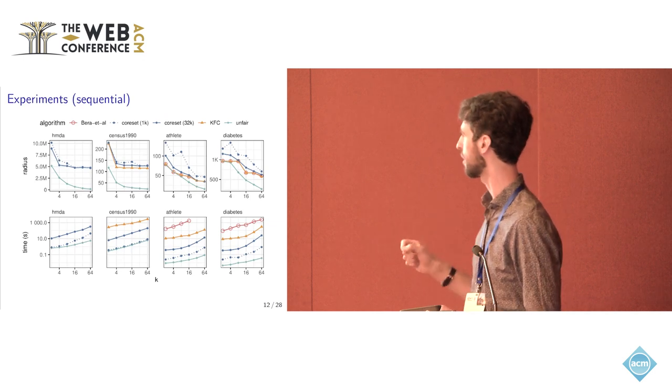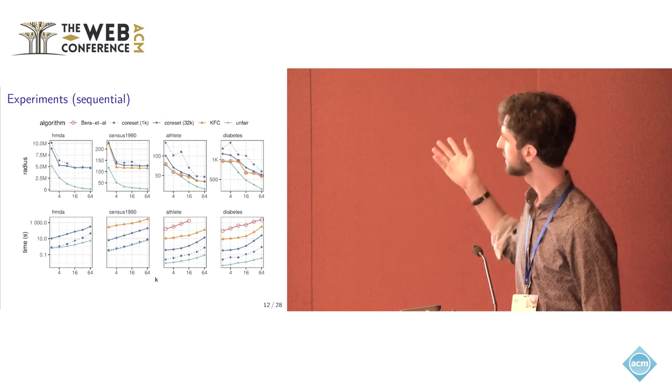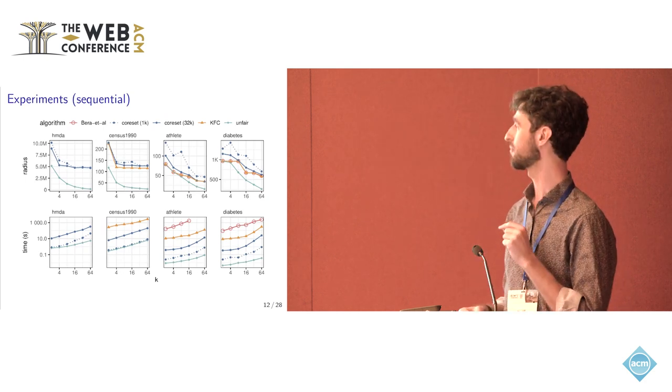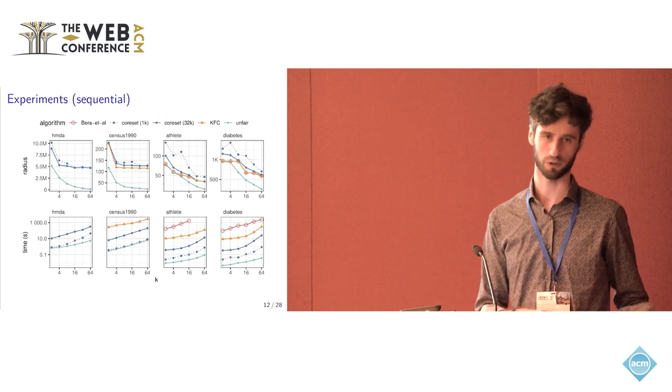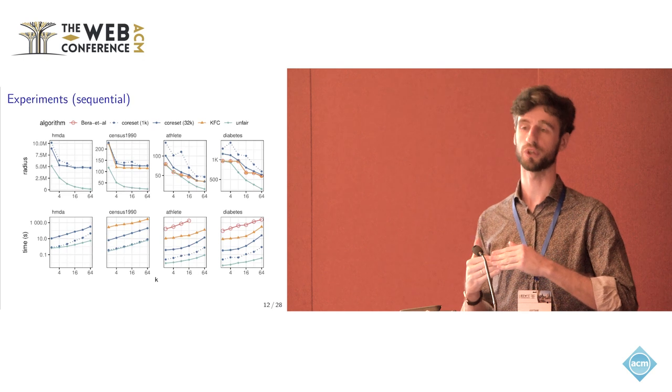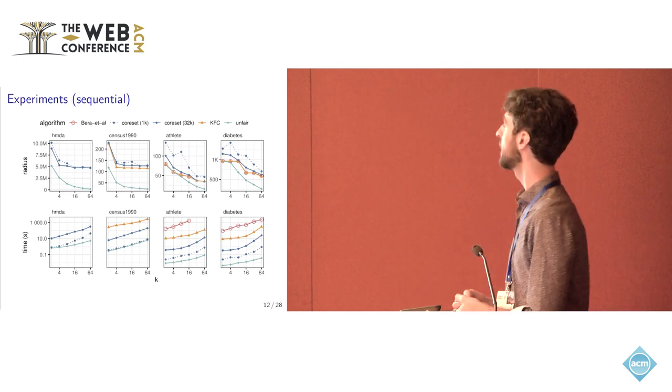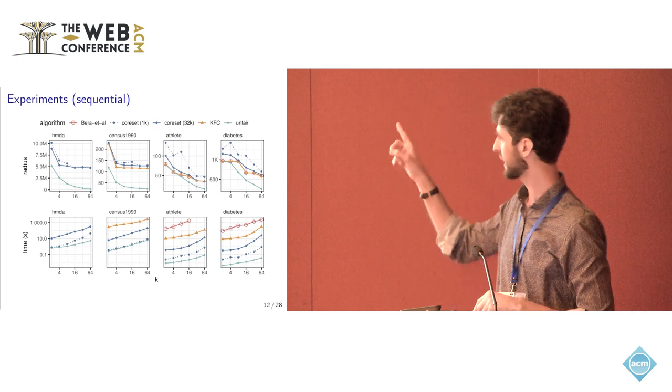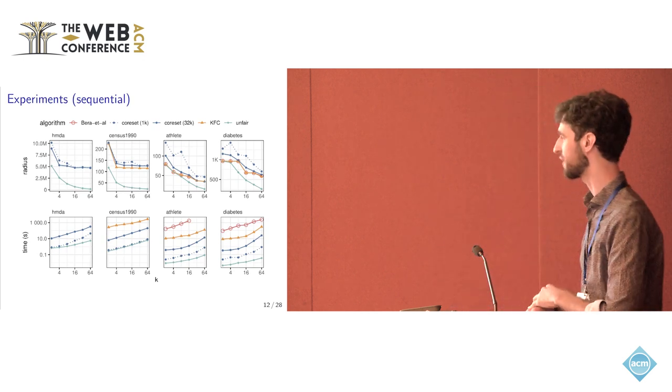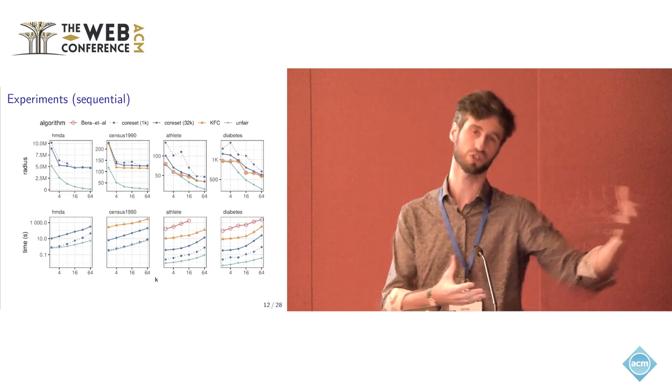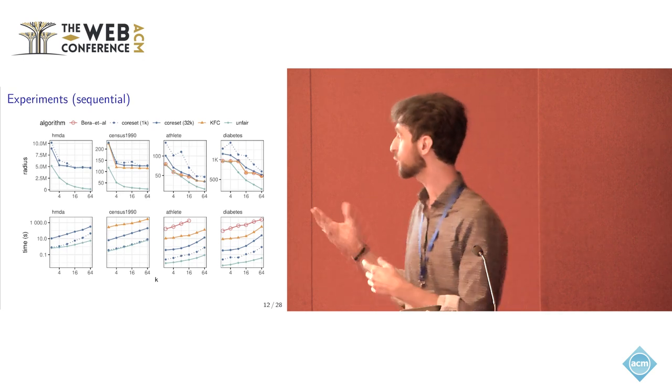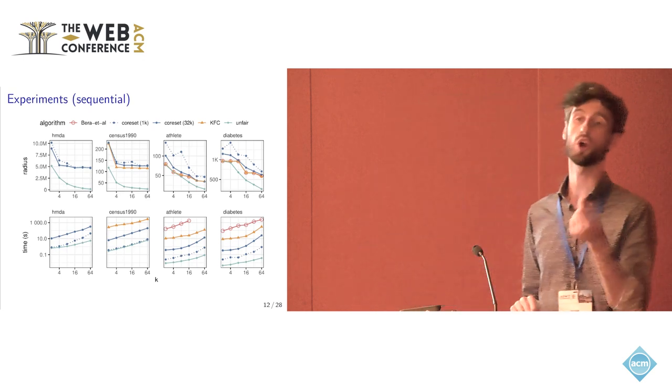I just want to highlight a couple of things. The teal line, the bottom most line, is the performance of the unfair clustering algorithm without fairness constraint, just to see how much utility you lose by imposing fairness. The other lines are two baselines like the red and the orange one, whereas the blue line is our own algorithm under two different core set sizes because there is a trade-off. The larger the core set, the more accurate the representation and vice versa.